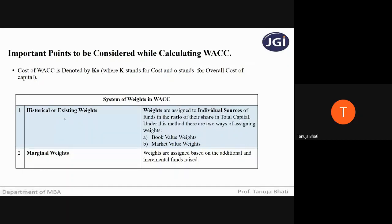Under historical or existing weights, weights are assigned to individual source of funds in the ratio of their share in total capital. It means what share each source of fund has in the total capital — that will be the weight assigned. Under this method, there are two ways of assigning weights: one is book value weights and one is market value weights.